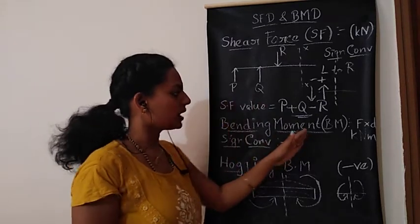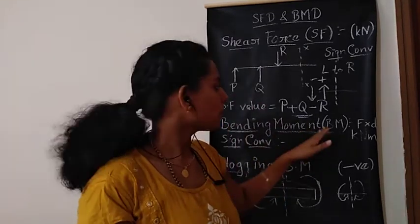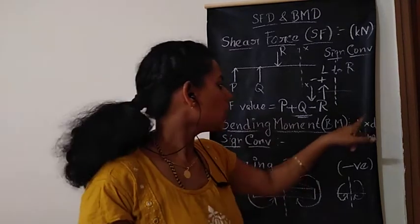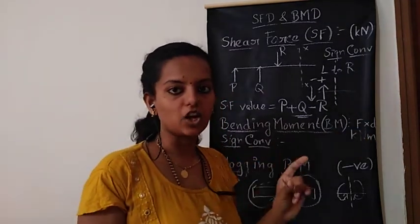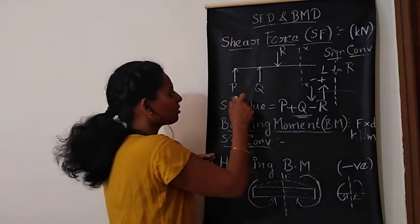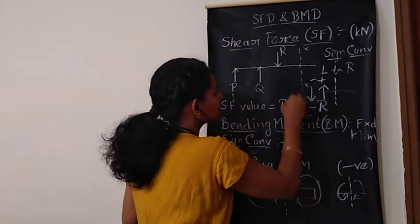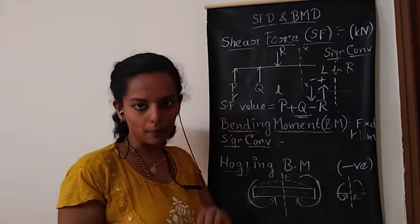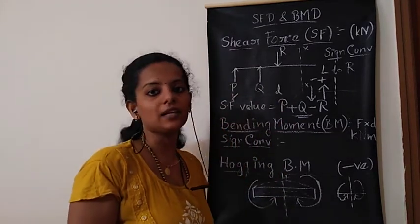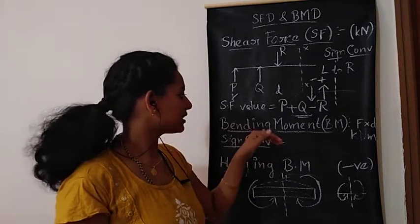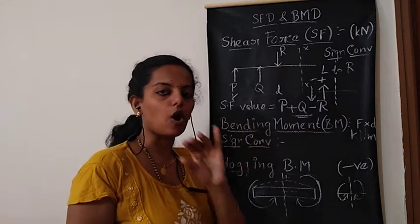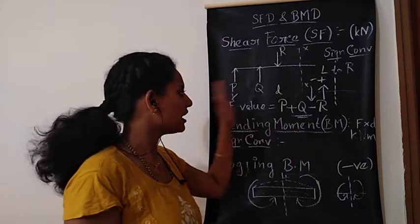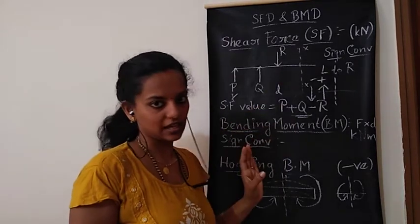Next we will see what do you mean by bending moment. Bending moment — first of all, what is moment? Moment is nothing but force into a perpendicular distance. Suppose this is a force and suppose this is a distance D, so P into D is nothing but your moment. Then, what do you mean by bending moment? Bending moment is nothing but the algebraic sum of all moments caused by the forces either to the left or right side of the section.